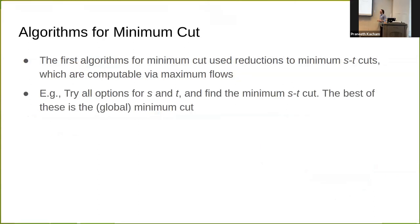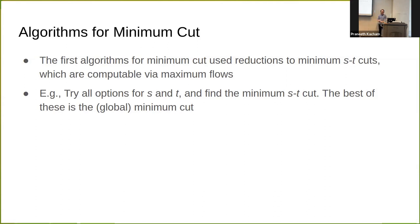The very first algorithms for minimum cut were based on minimum ST cuts, which in turn can be solved by maximum flows. An ST cut is a minimum cut where you have two special vertices S and T and require that S and T be in different parts of the cut. This is solvable via max flows by our favorite theorem from network flows. So one easy option to solve the global min cut problem is to try every option for S and T and pick the best one. Over the years, more algorithms along this line were developed to reduce the number of max flow computations necessary.